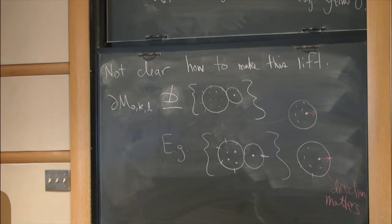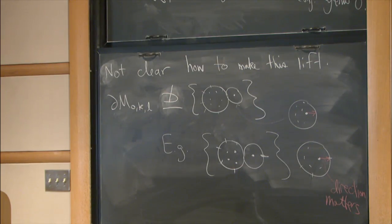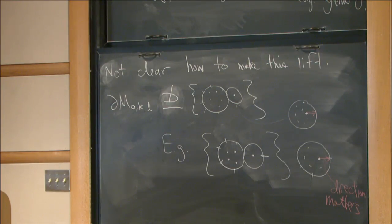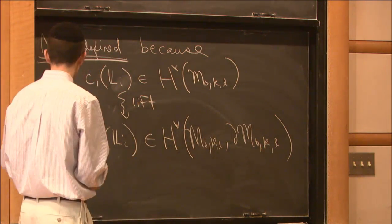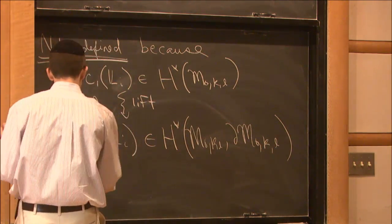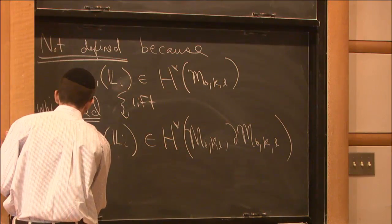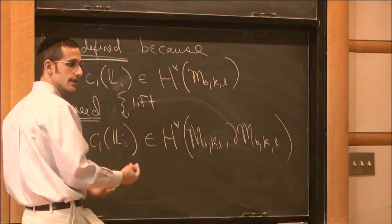The issue is that this nice line bundle doesn't trivialize naturally over the boundary of the moduli space. The line bundle extends — it's perfectly well defined — but you want to somehow trivialize it over the boundary. It's not trivial on the boundary. That's exactly the issue. We want to make this lift — somehow trivialize it.